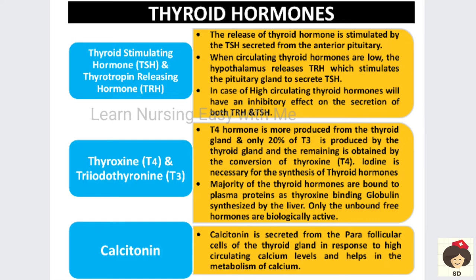The release of thyroid hormone is stimulated by TSH secreted from the anterior pituitary. Whenever thyroid hormones are low in the circulating blood, the hypothalamus will release thyrotrophin releasing hormone, which will stimulate the pituitary gland to secrete thyroid stimulating hormone. If the thyroid hormone level in the blood is high, there will be an inhibitory effect — the hypothalamus will inhibit the secretion of T3, and TSH will also not be stimulated.